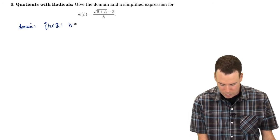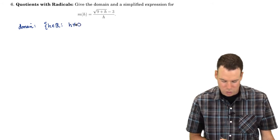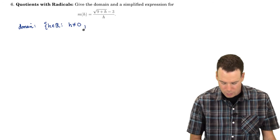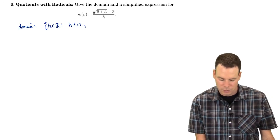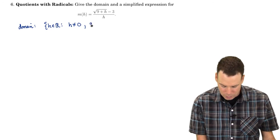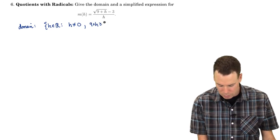Well, I certainly can't have the bottom vanish so h can't be zero. I also can't have 9 plus h being negative because I've got to take the square root of it. So I need 9 plus h to be bigger than or equal to zero.